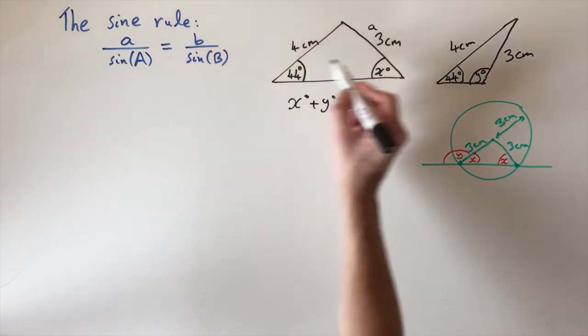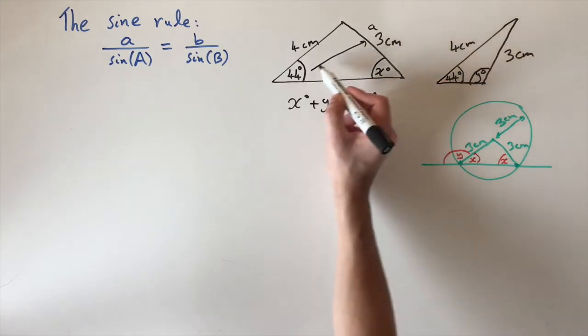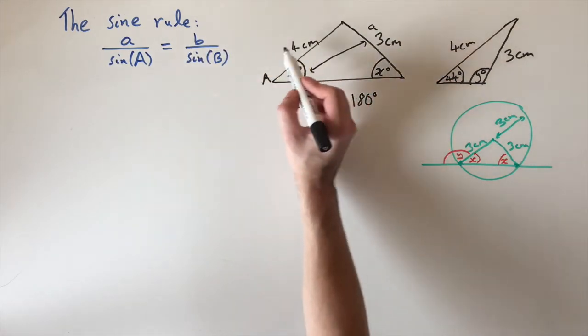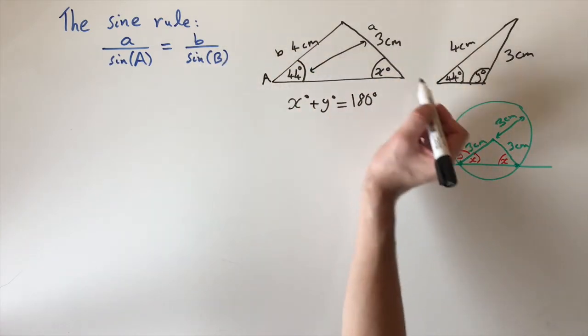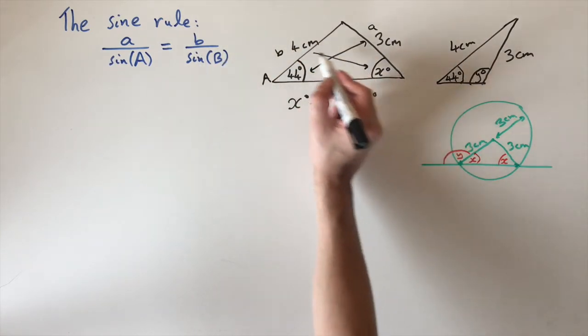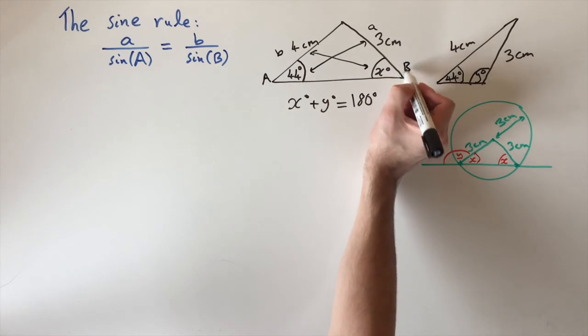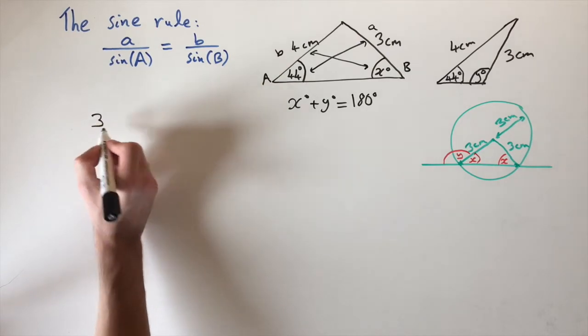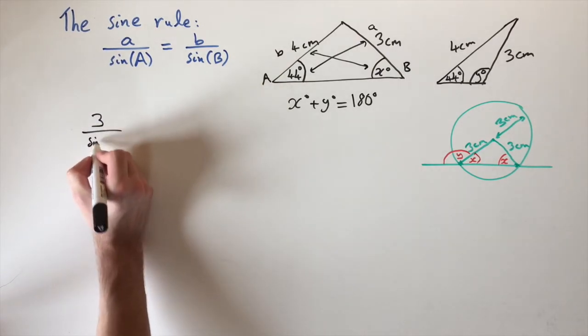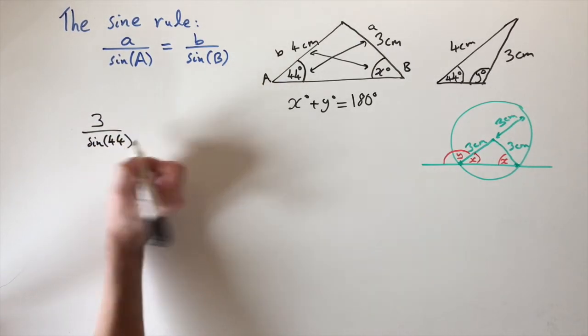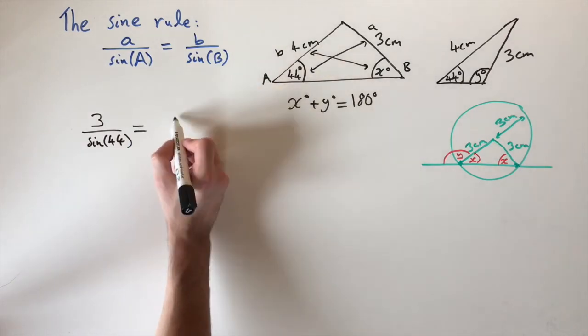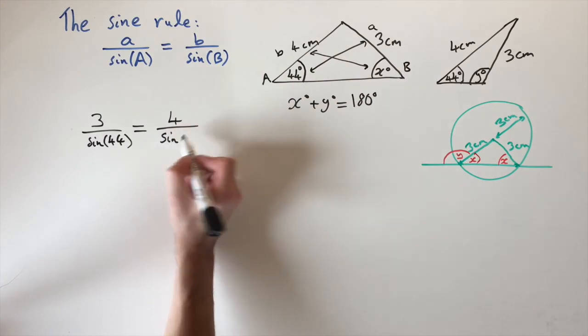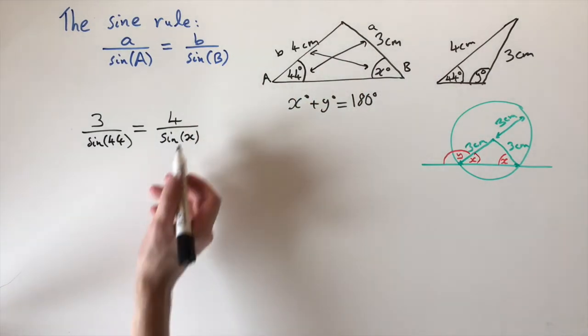then the angle capital A is the one opposite to this length. So this angle is A. And then we need b. Let's say this length is b, and then the angle is the one opposite this length, so I'll let this be capital B. Then we can use this formula. We have a divided by sin(A), which is 3 divided by sin(44°). Then by the sine rule, this equals b, which is 4 centimeters, divided by sin(B). And here B is just x. We can solve